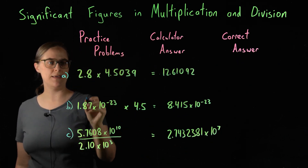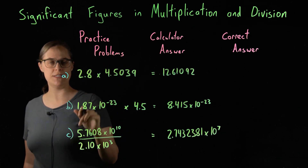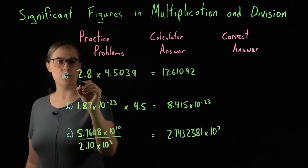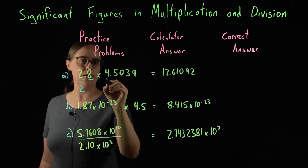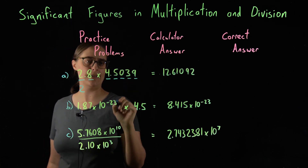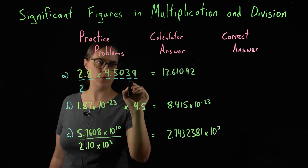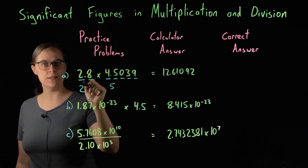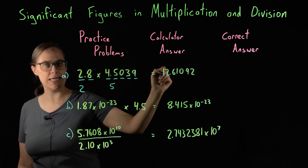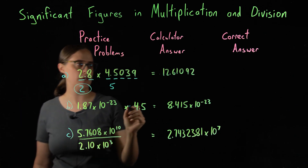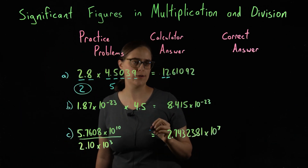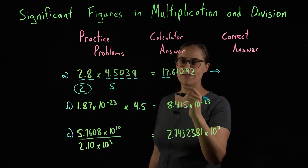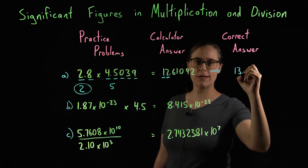Let's look at Problem A: 2.8 times 4.5039. 2.8 has two significant figures. 4.5039 — all of these digits are significant: 1, 2, 3, 4, 5 — five significant figures. The lowest is two, so the answer should have two significant figures. The calculator answer is 12.6, which rounds up, so our correct answer is 13.